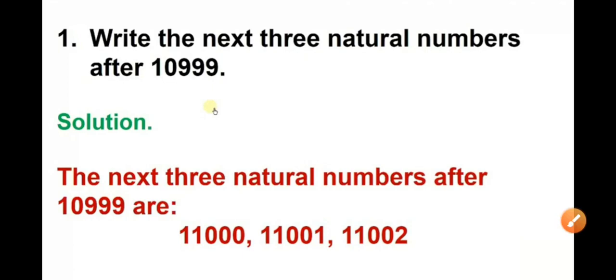Exercise 2.1 First question, write the next three natural numbers after 10999. So, how can you write the next three numbers? You have to add one to the next number.